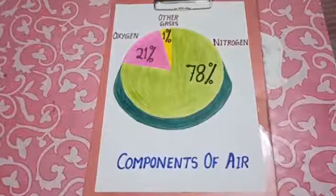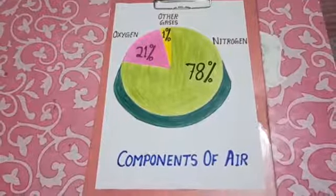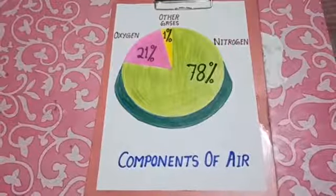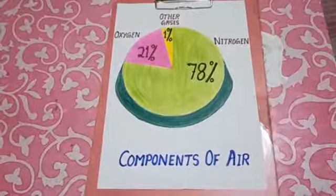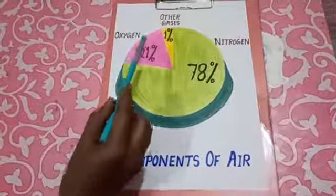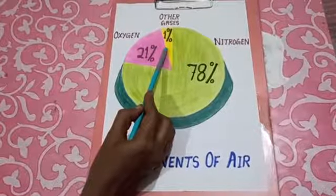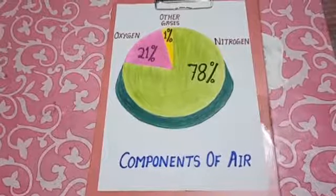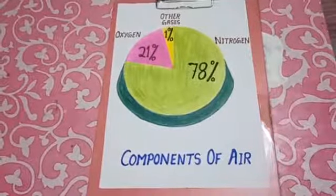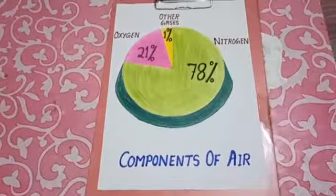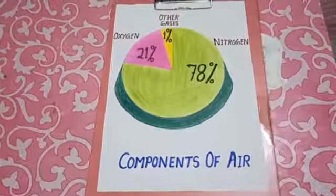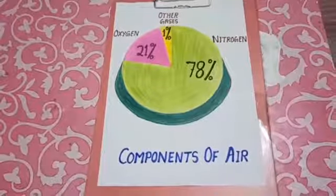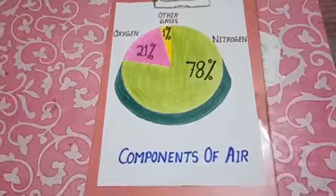Other gases including carbon dioxide, argon, helium, neon, hydrogen, etc. form the remaining 1%. Carbon dioxide makes up a very small part of the air, but it is essential for photosynthesis. Argon is used in electric bulbs. Helium gas is filled in balloons.